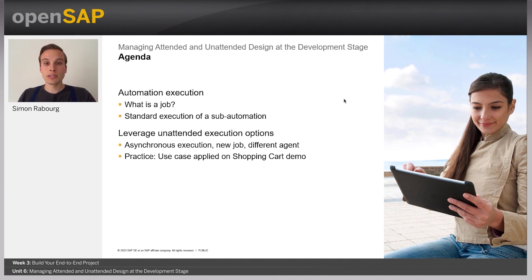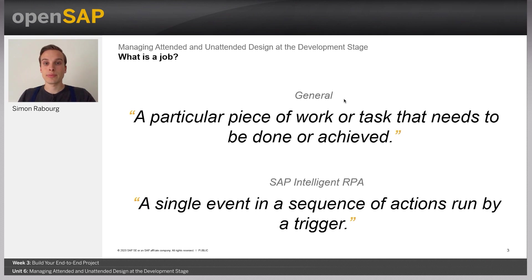Finally, we will apply this feature to the shopping cart demo we designed two units ago. Let's now define what is a job. In general, a job is a particular piece of work or task that needs to be done or achieved. In the world of SAP Intelligent Robotic Process Automation, that's a single event in a sequence of actions run by a trigger.